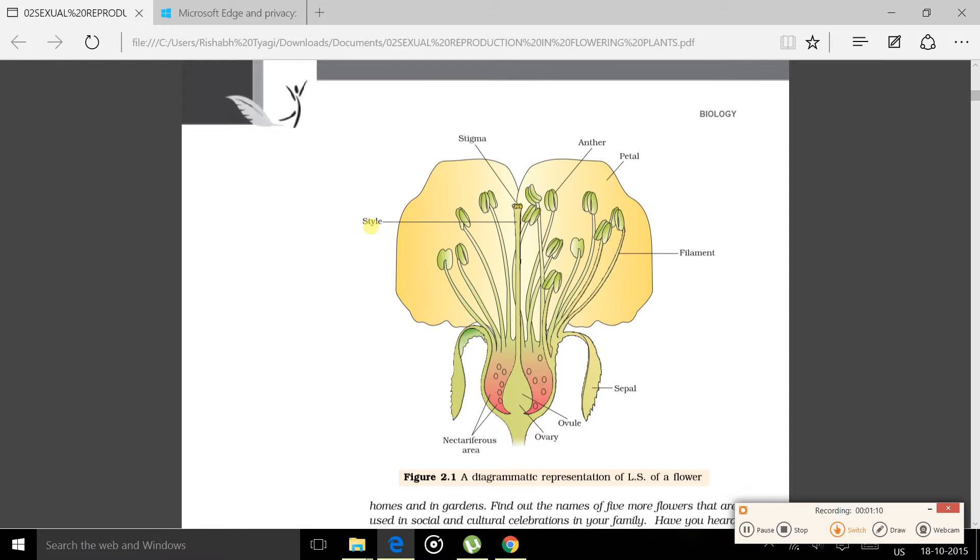Gynoecium consists of three parts: stigma, style, and ovary. Stigma acts as a landing platform for pollen grains.